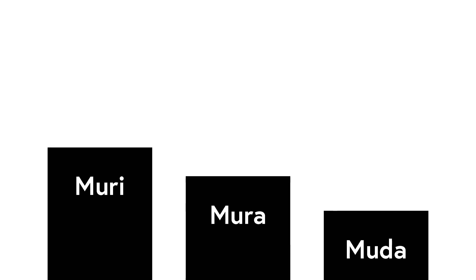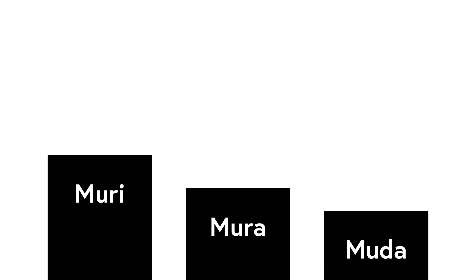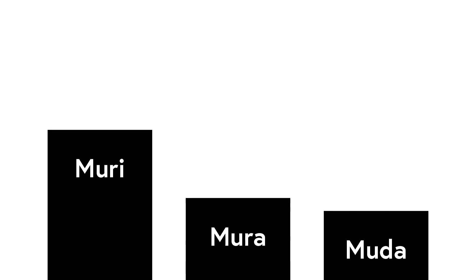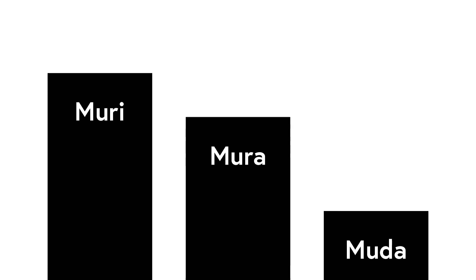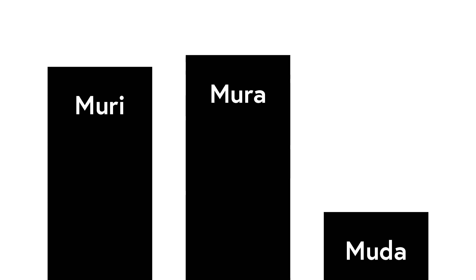Note that many have unfortunately focused only on Muda or waste and not paid much attention to Muri and Mura. That is a cardinal mistake and will not lead to sustainable lean transformations. I suggest to start with eliminating Muri, then to reduce Mura, and finally look at Muda.